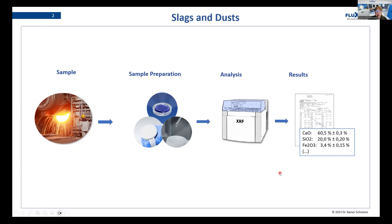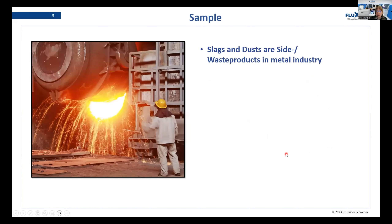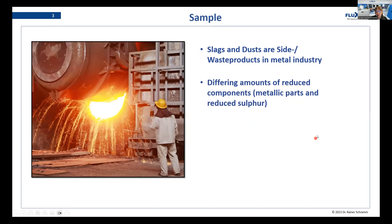Today we are talking about slag and filter dusts. Let's have a look at what makes these samples so special. Slags and dusts are by-products or waste products in the metal industry. What makes them so challenging is that there are differing amounts of reduced components in these slags and dusts. You will have some metal parts in your slags and also maybe reduced sulfur, and these reduced components play an important role in how you need to deal with these samples when it comes to analysis.